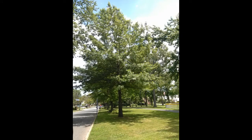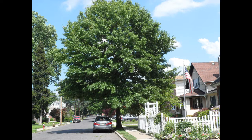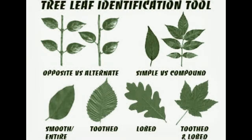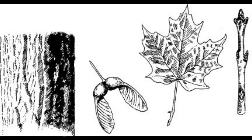Here in Dumont we have many types of trees, but the majority of our older trees are maple and oak. You can identify a tree by making a few simple observations. Looking at the tree leaves and other physical characteristics can help you identify the tree correctly.